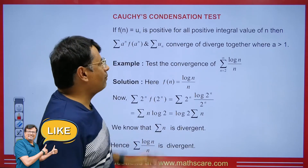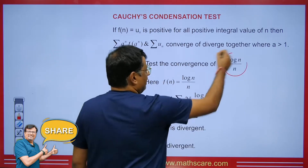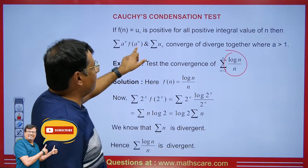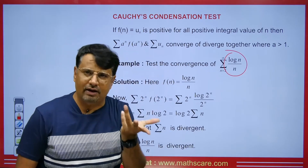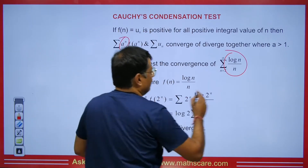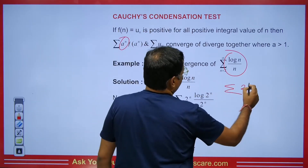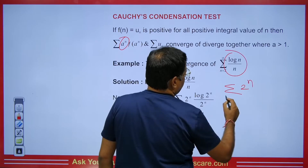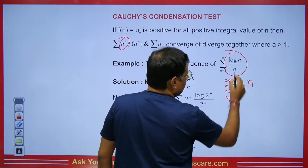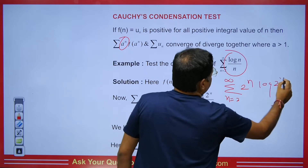So what you have to do is: wherever there is n in the function, we will put a to the power n — meaning 2 to the power n — and then we will put 2 to the power n in front. So if I write this here, it will be 2 to the power n, with n going from 2 to infinity. Wherever there is n, we put 2 to the power n.